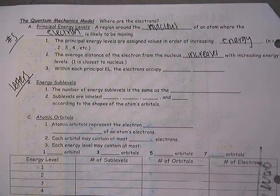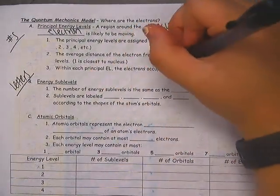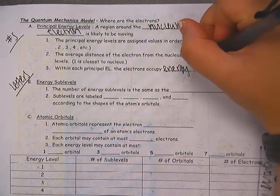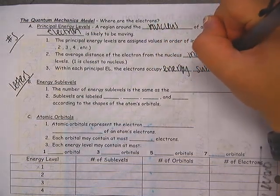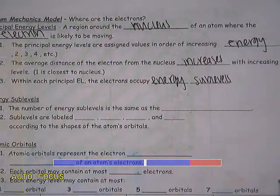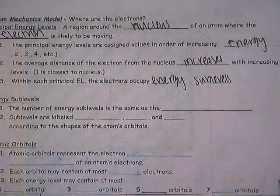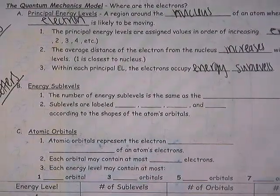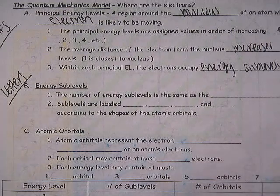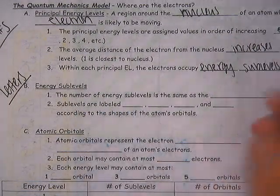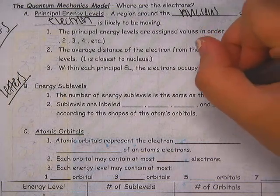Within each principal energy level, electrons occupy energy sub-levels. The sub-levels, as a reminder, are the letters: S, P, D, and F. And the number of energy sub-levels is the same number as the number of energy levels.